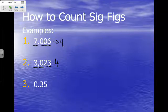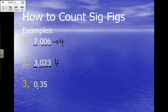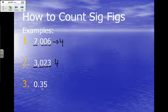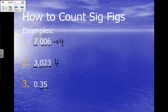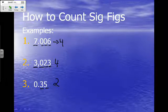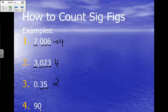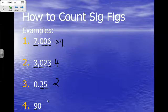Third example: 0.35. The decimal is present — just like if you're present in class, I can see you. So we start on the Pacific side and count from the first non-zero digit: 1, 2 — two significant figures. Fourth example: 90. The decimal is absent, so we start on the Atlantic side. We skip the zero and count the 9 — this has one significant figure.